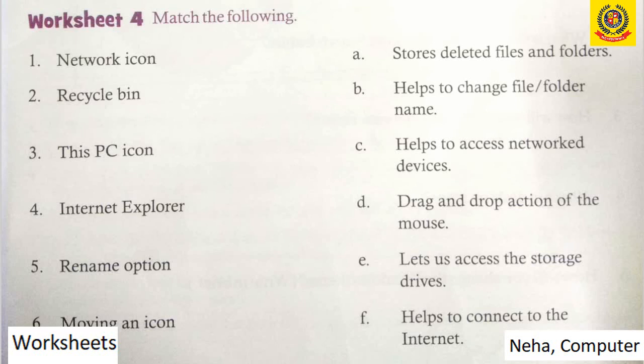First is network icon, and network icon is matched with C — that is, helps to access network devices. Write 1 after the sentence. Second is recycle bin, which is matched with A — stores deleted files and folders. Write 2 after the sentence. Third is This PC icon. It is matched with E — lets access the storage drives. Write 3 over there.